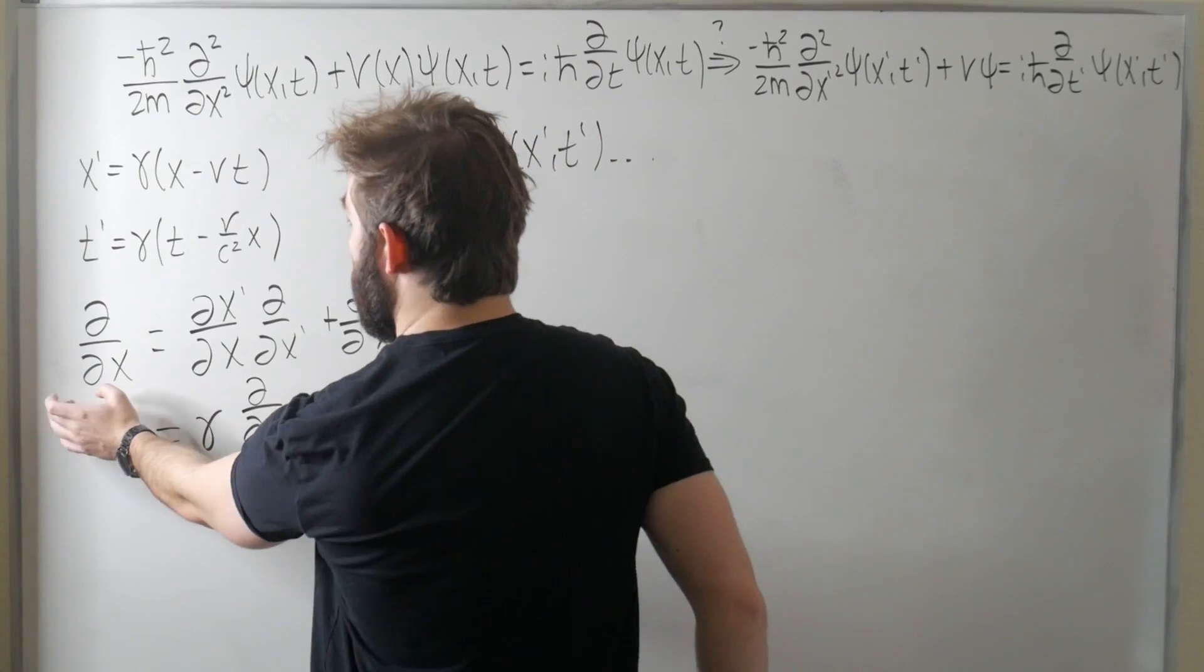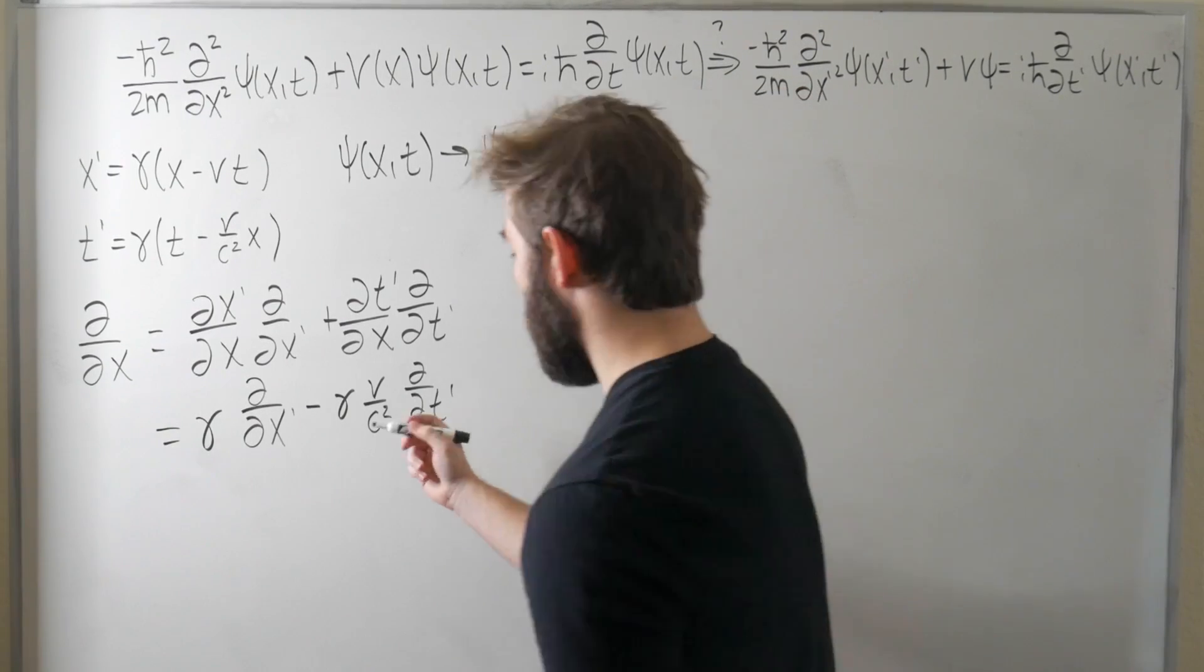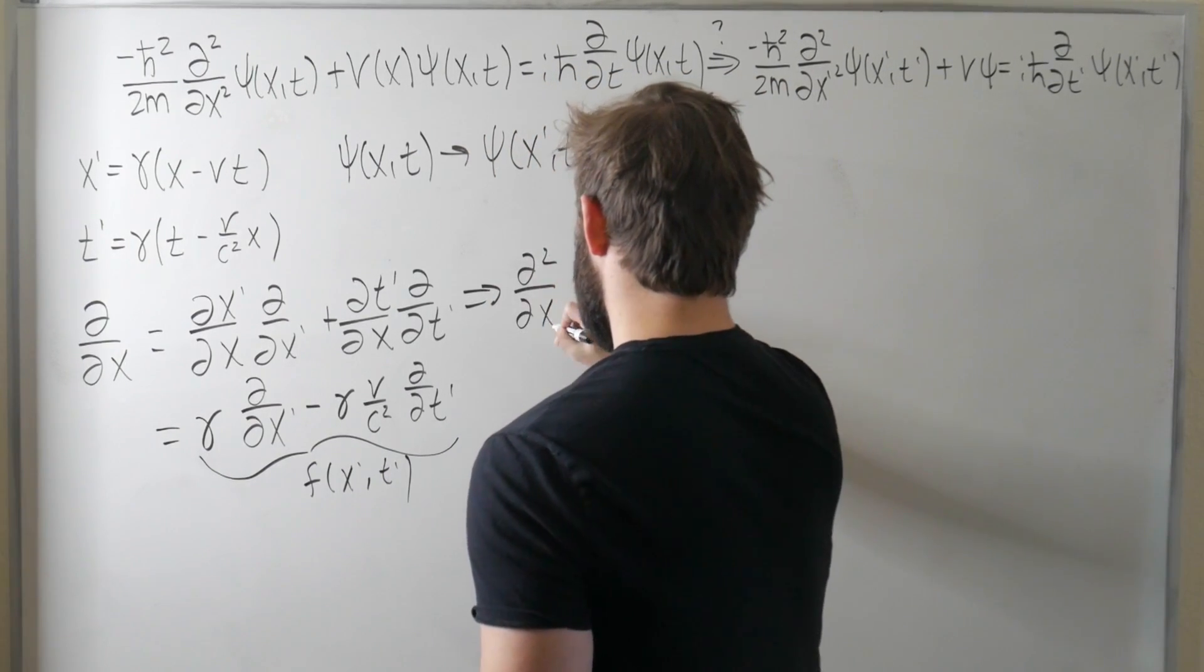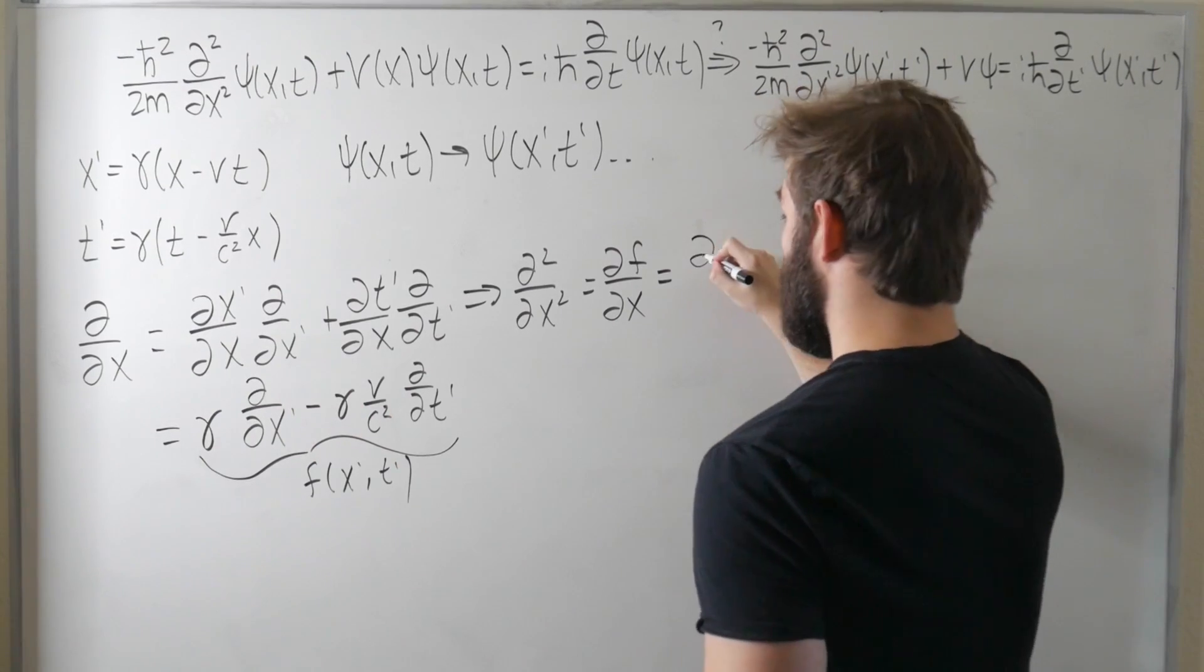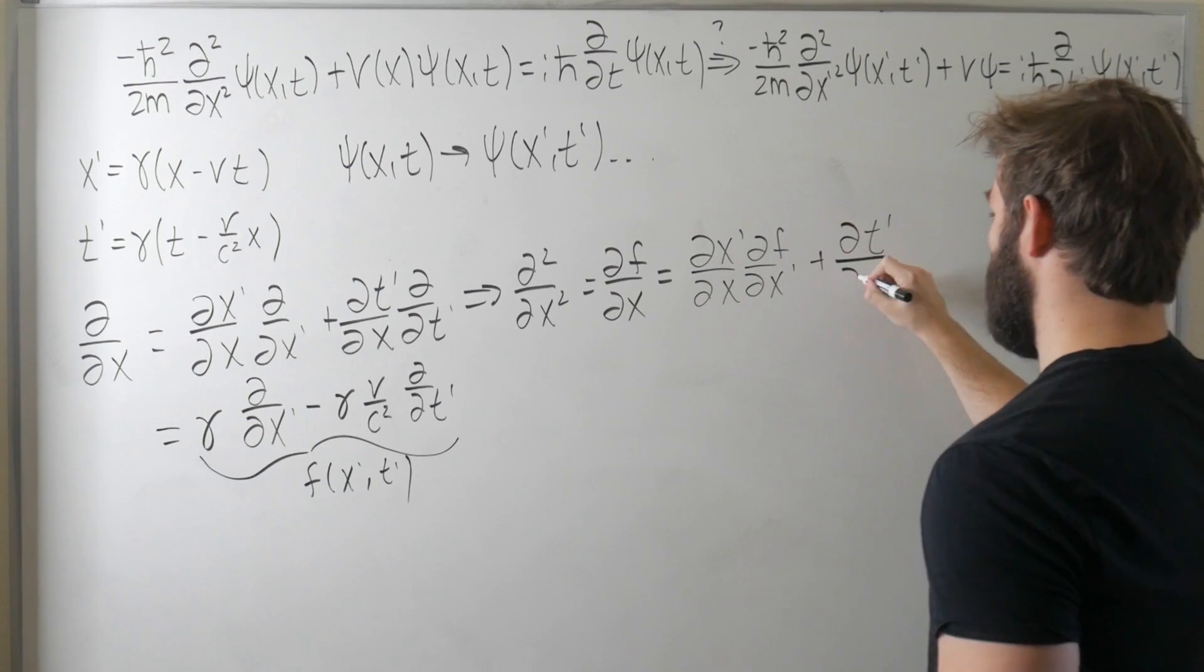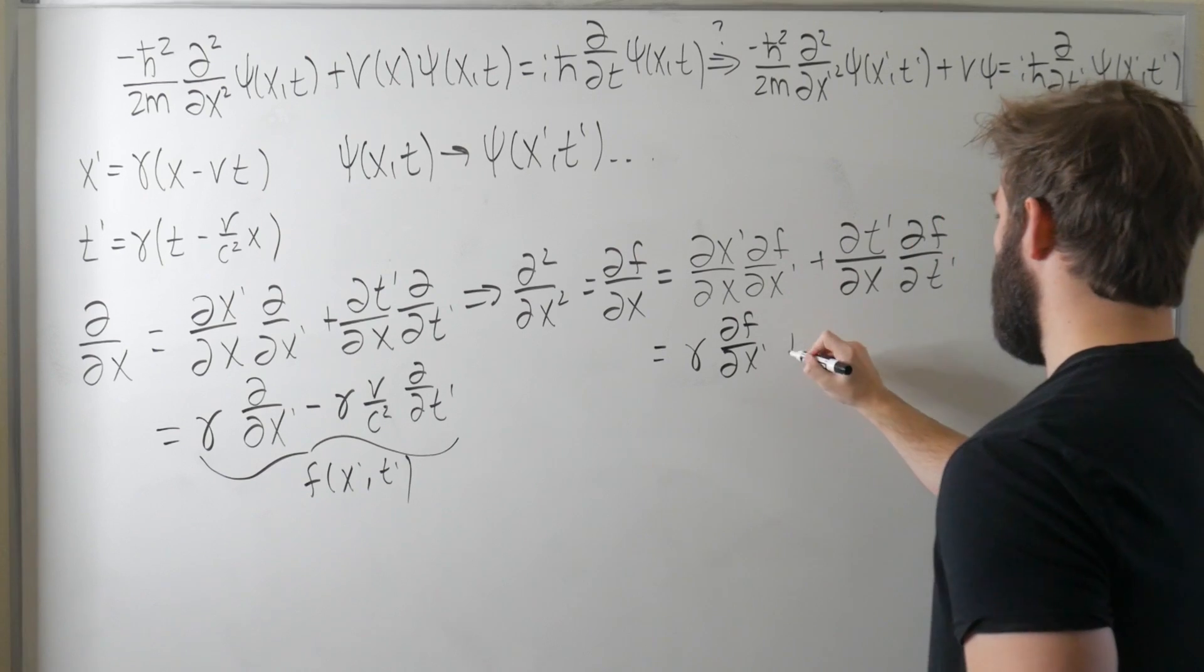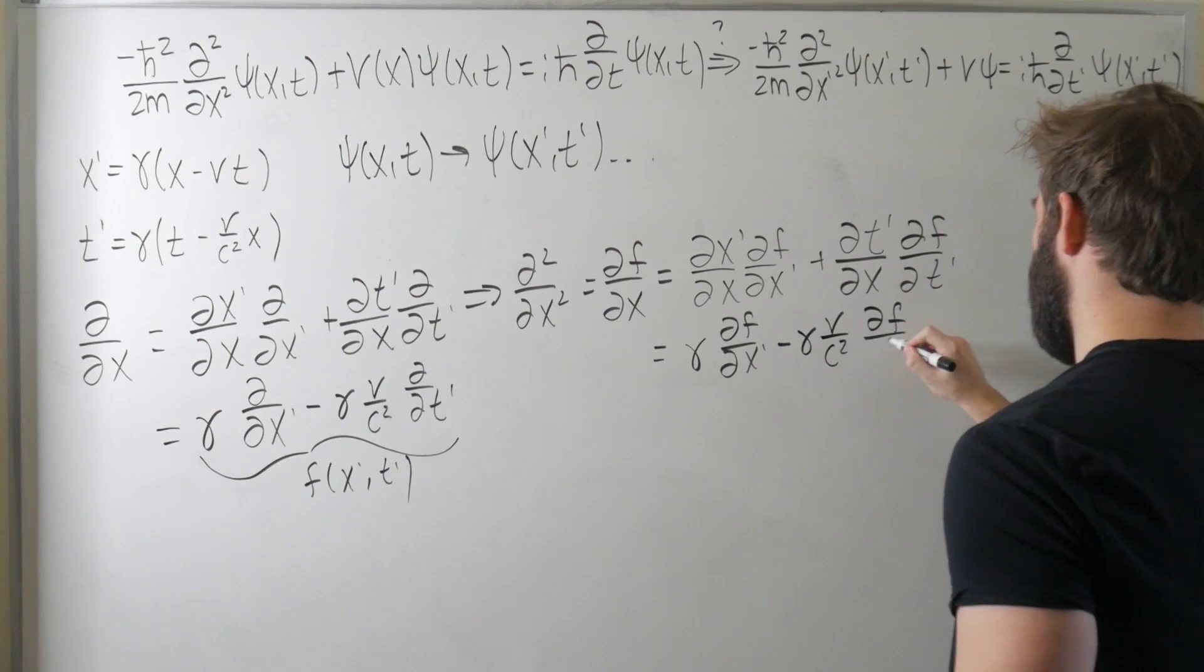Now all we have to do is take the derivative of this, again with respect to x, to get our second derivative in terms of all of these prime stuff. To make it a little bit more concise, I'm going to call this entire expression here, we're going to call that f. f is a function of x prime and t prime. Then that tells us that d squared dx is equal to df dx, which is equal to, from the chain rule again, it's going to be dx prime dx df dx prime plus dt prime dx df dt prime. We already know what these transformation coefficients are, this is just going to give us a factor of gamma df dx prime. We already know what this is, that's going to give us a minus gamma v over c squared, minus gamma v over c squared, df dt prime.